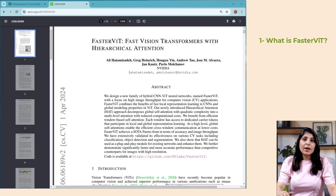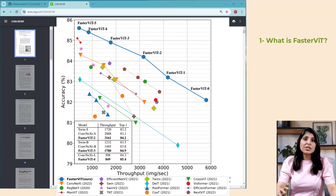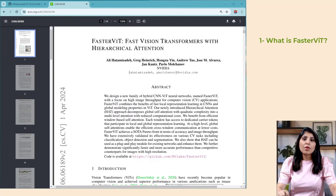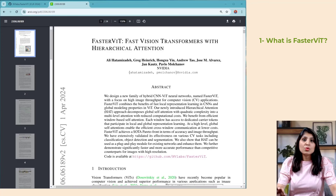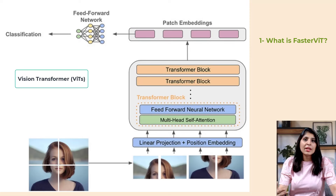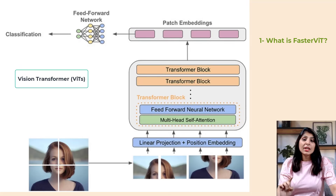Let's start by understanding what FasterViT is. FasterViT is a variant of vision transformer architectures designed to address performance and efficiency challenges associated with traditional transformer models in computer vision tasks. Vision transformers originally come from transformer architectures initially developed for natural language processing. In 2020, researchers discovered that vision transformers could also work with images. ViT divides the image into patches, flattens them, and then processes these patches as a sequence using the transformer model.